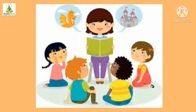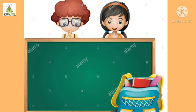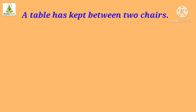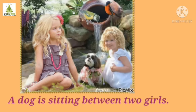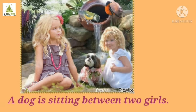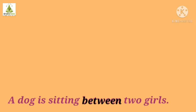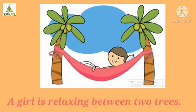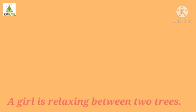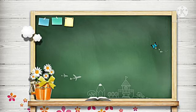It is time for our next preposition, and it is 'between'. A table has been kept between two chairs. Where can you see that table? Between two chairs. Dog is sitting between two girls. Where is the dog sitting? Between two girls. A girl is relaxing between two trees. Where is she relaxing? Between two trees.